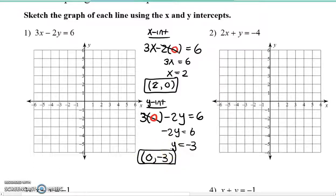So we're going to plot both of these points. Two comma zero means you're going to go two on the x-axis and zero on the y. And zero negative three, zero on the x-axis, down three on the y-axis. Two points make a line. So we can connect those two points, draw our arrows to show it goes on forever. And we have our first answer for number one.